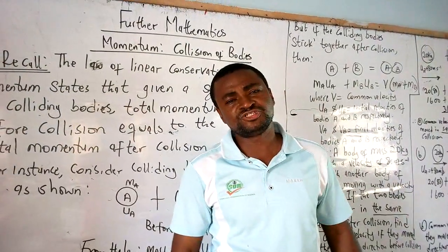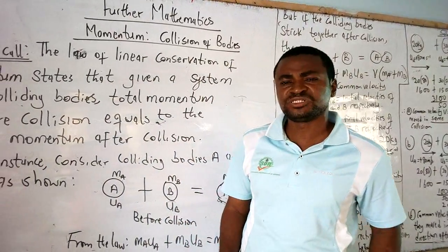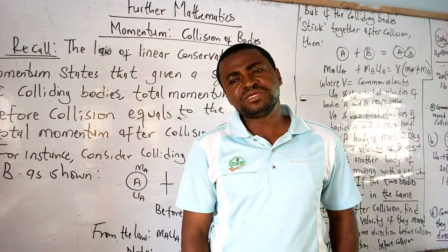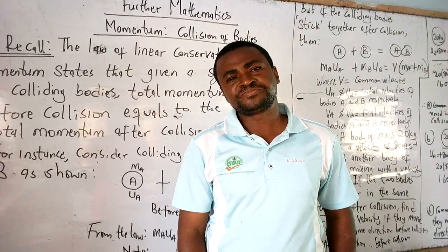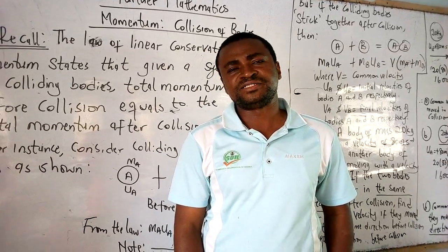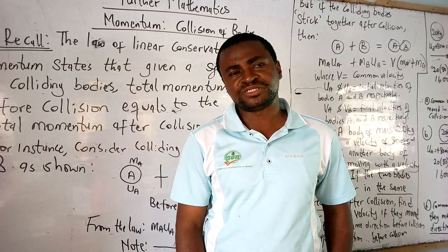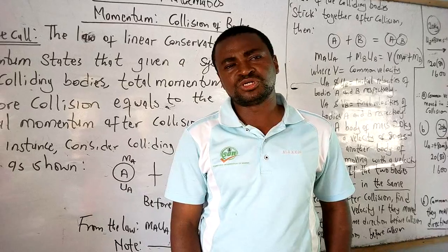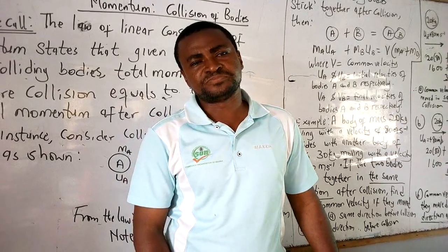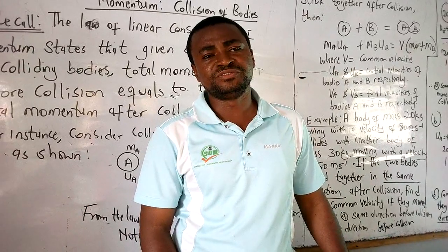Momentum is simply the measure of the quantity of motion that a body possesses. The value for momentum is given as the velocity of that body multiplied by the mass of the body. So the higher the velocity of the body at a constant mass, the higher the momentum. And the higher the mass of the body at a constant velocity, the higher the momentum. Mathematically, momentum is given as the mass of that body times the velocity of that body. Velocity is simply defined as the speed of an object taken in a given direction.